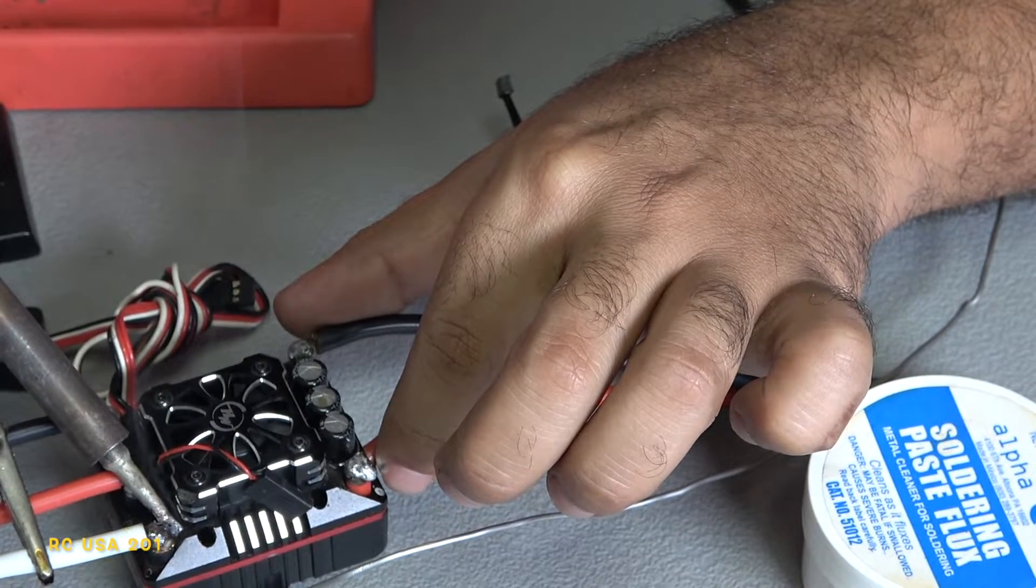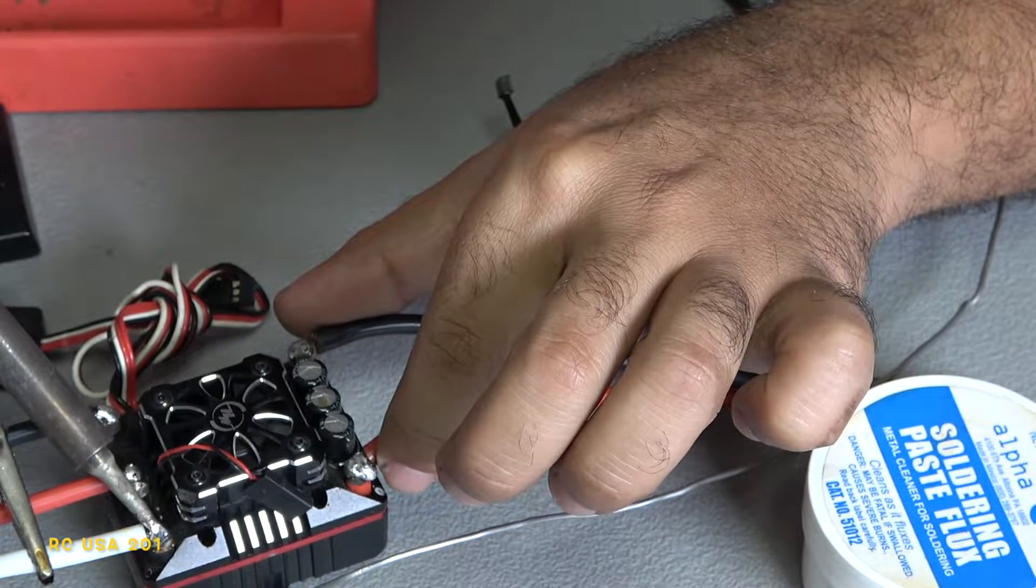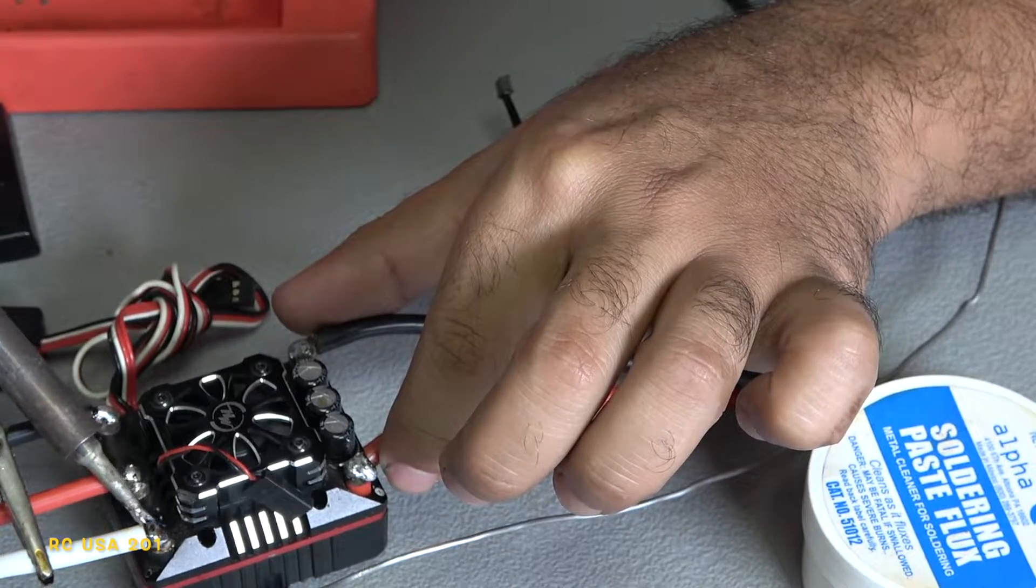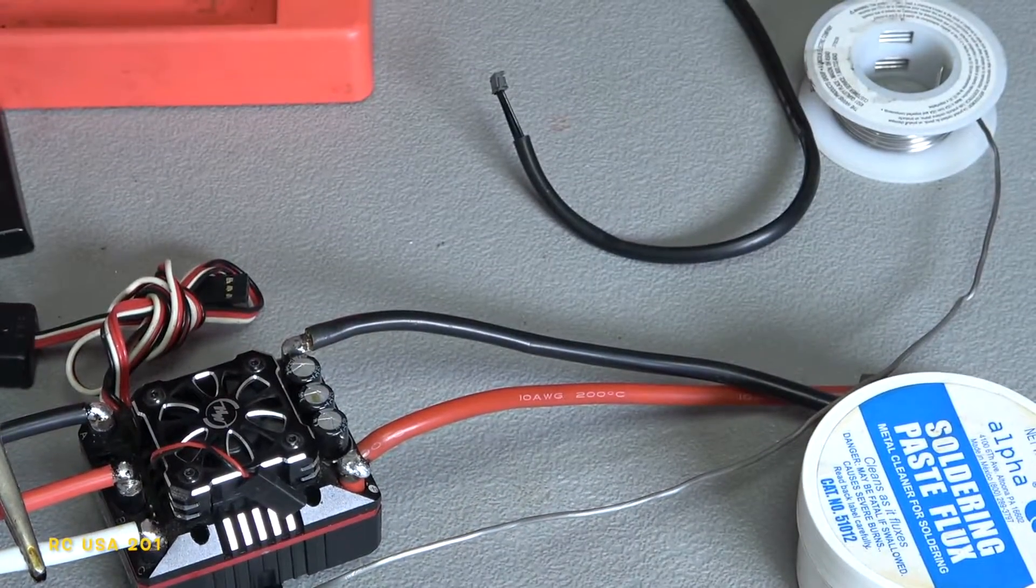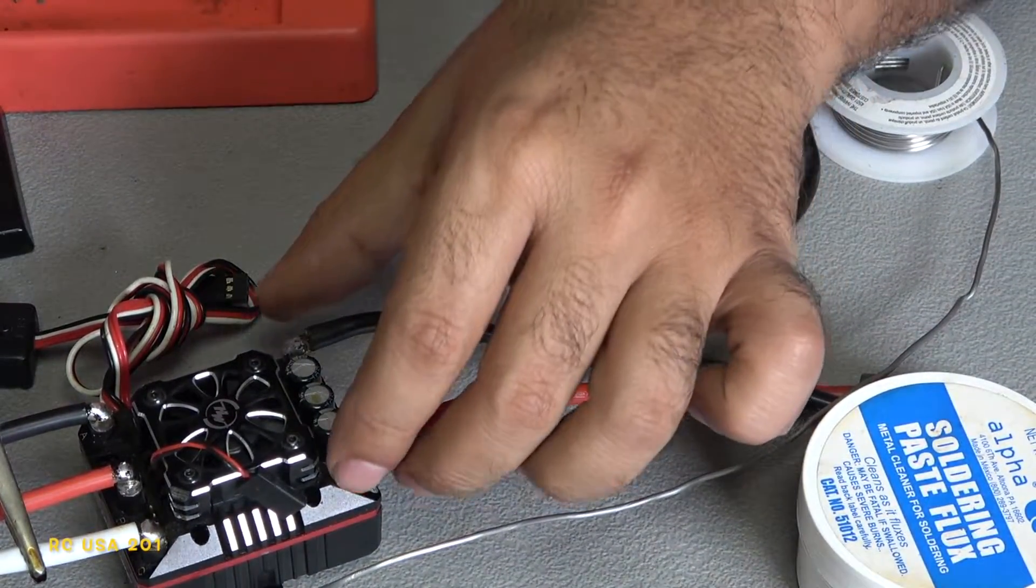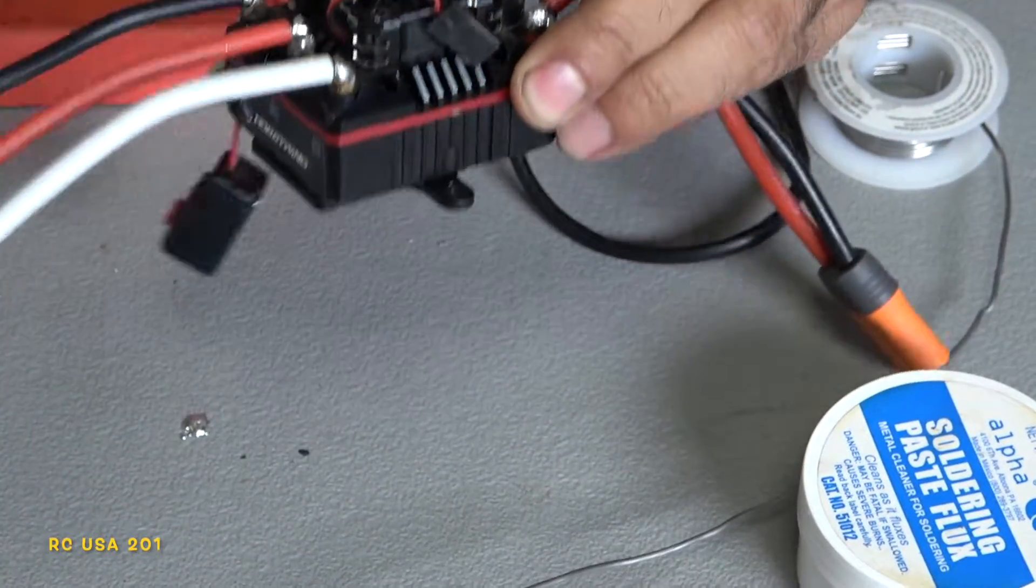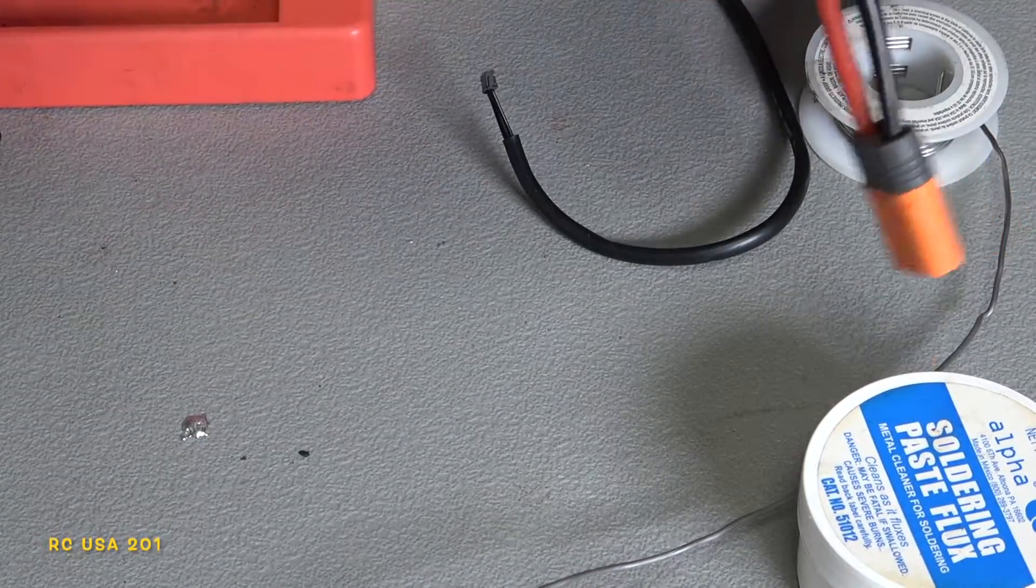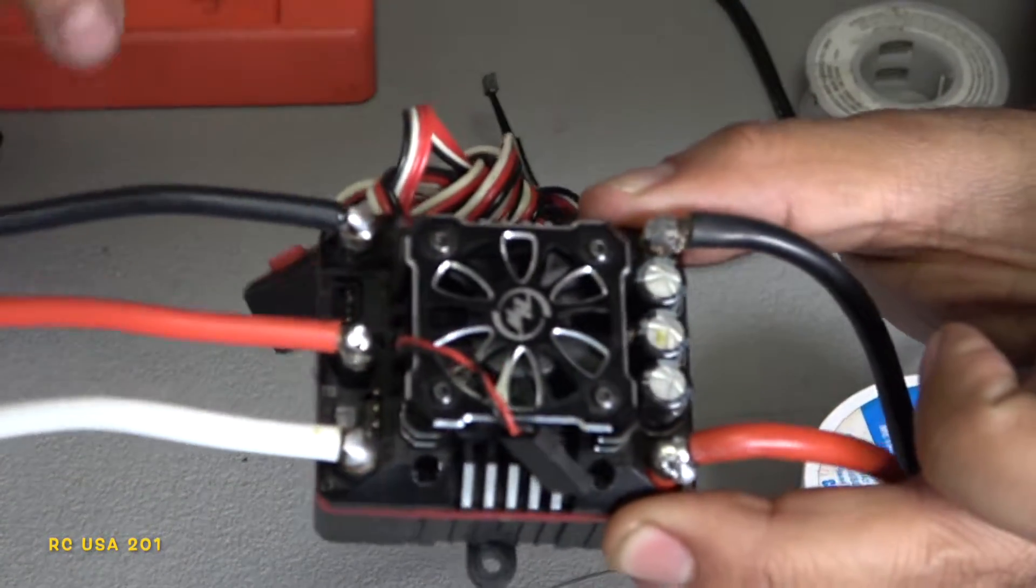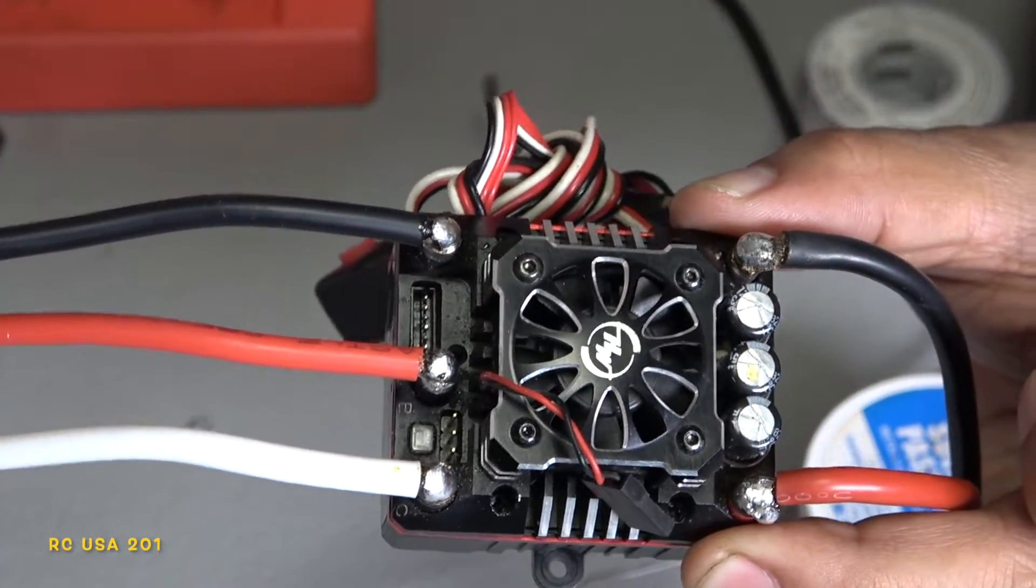A lot of people told me my ESC kept on heating up. This Hobbywing will heat up on you if you put a limitless on it. But they told me it was on my ESC, but really - they told me it was a solder, but really it wasn't the solder.